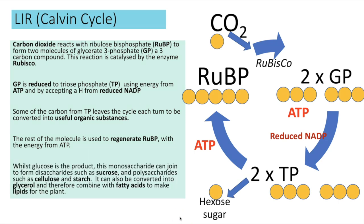It takes six turns of the Calvin cycle to accumulate six carbons and create a hexose sugar such as glucose. That monosaccharide could join with fructose to make sucrose, or many glucose molecules could join in condensation reactions to make polysaccharides such as cellulose and starch. Hexose sugars can also be converted to glycerol — a three-carbon sugar — for making lipids, or nitrogen can be added to begin making amino acids.